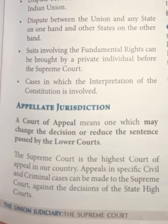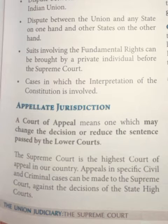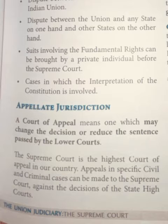Appellate jurisdiction: The Supreme Court is a court of appeal, which means it may change the decision or reduce a sentence passed by a lower court or High Court. If someone is not satisfied with the judgment of a lower court or High Court, they appeal to the Supreme Court. The Supreme Court is the highest court of appeal in our country. Appeals in specific civil and criminal cases can be made to the Supreme Court against the decision of the state High Court.